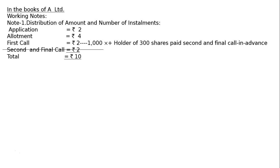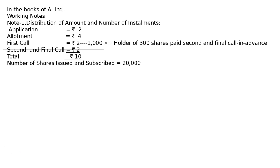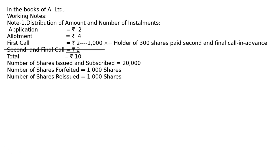5 shareholders holding total 1,000 shares failed to pay first call. At the same time, a holder of 300 shares paid second and final call in advance after the first call. These 1,000 shares were forfeited, and after this second and final call was made, these 1,000 shares are reissued as fully paid. Number of shares issued and subscribed: 20,000. The company's authorized share capital is Rs. 5 lakh, that is 50,000 shares of Rs. 10 each. Number of shares forfeited: 1,000. Number of shares reissued: 1,000.